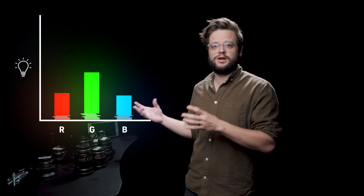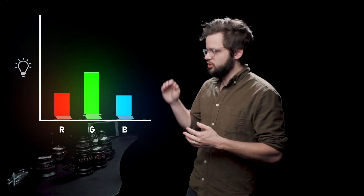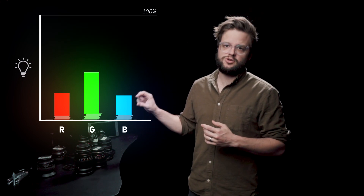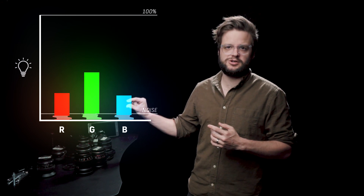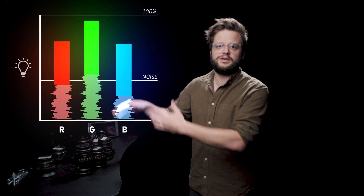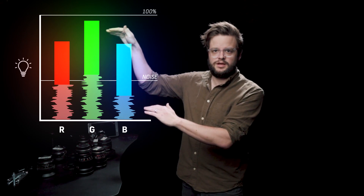When you turn up your ISO, you're turning up the gain of that signal in order to create a brighter image. Looking at this graph as a representation of what your photo or video looks like: you have the light being exposed into your sensor, and then you have a little bit of noise created by that electrical signal. Raising your ISO increases that signal and raises everything — but in doing that, you're also increasing the amount of noise. Now some of this is a bit oversimplified.